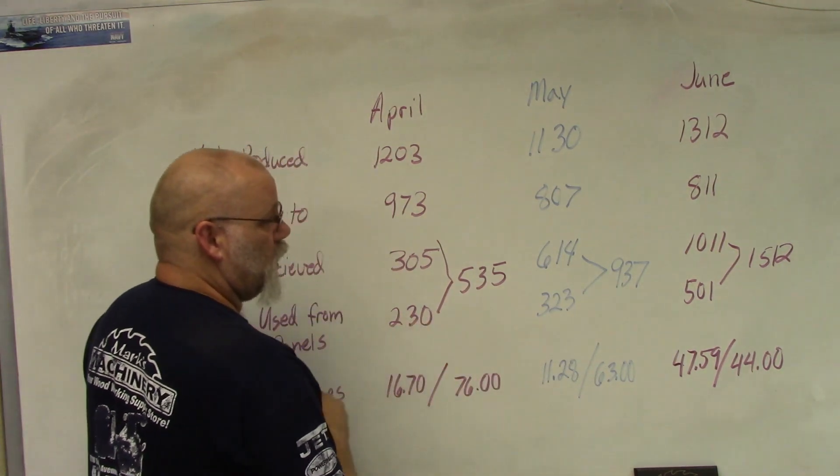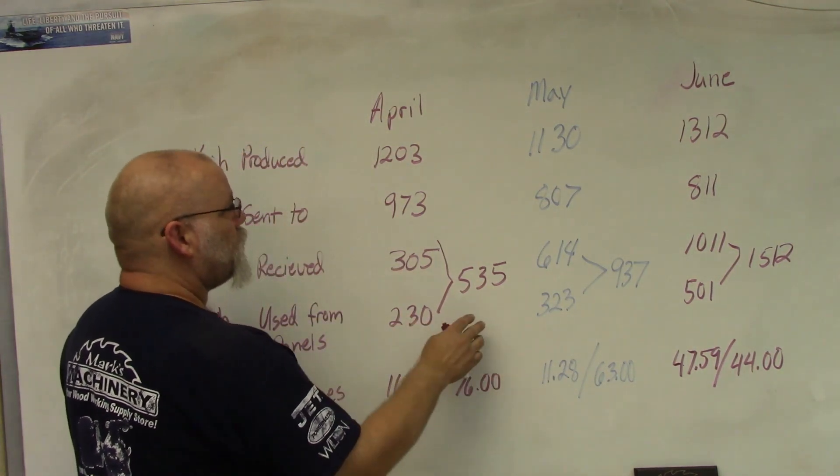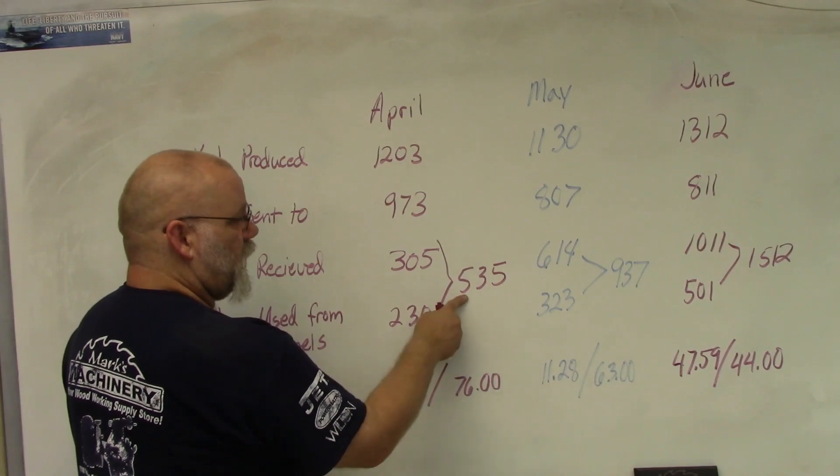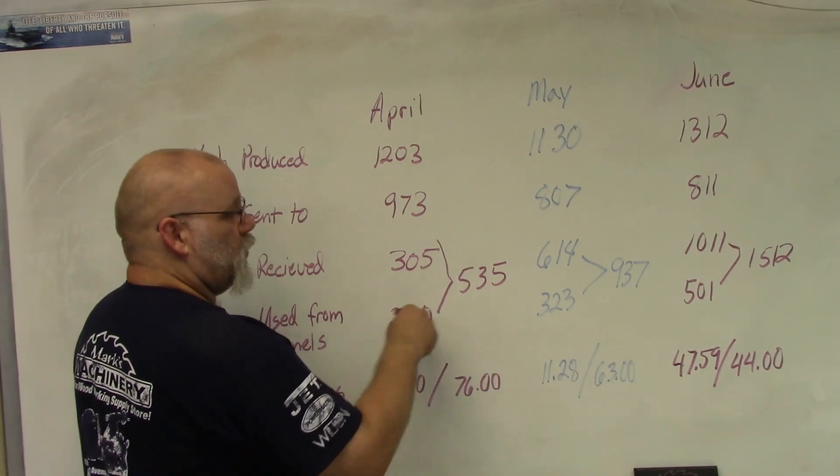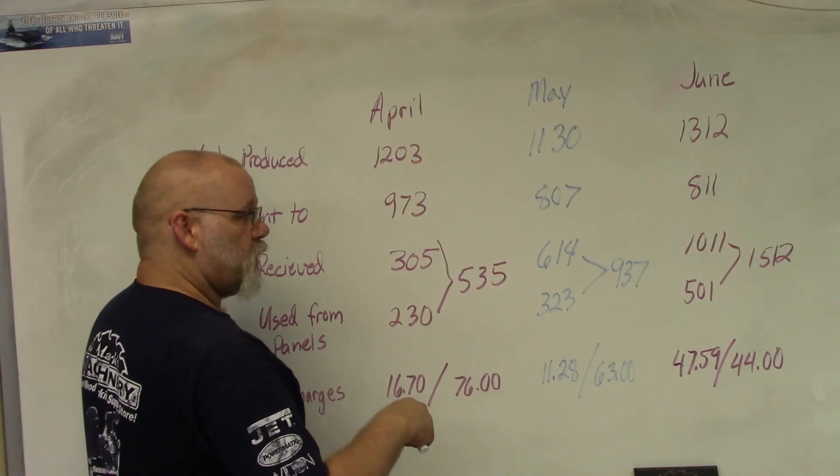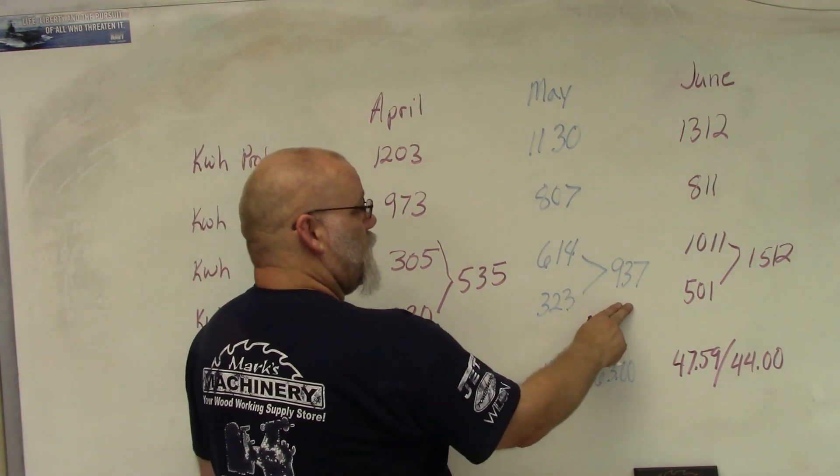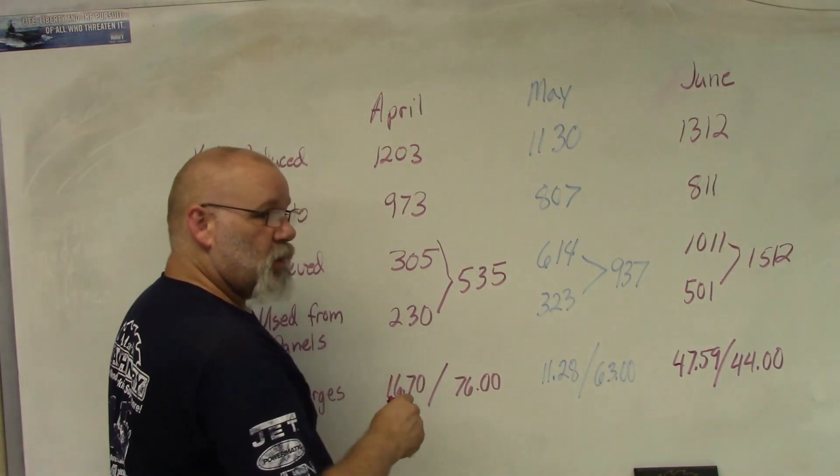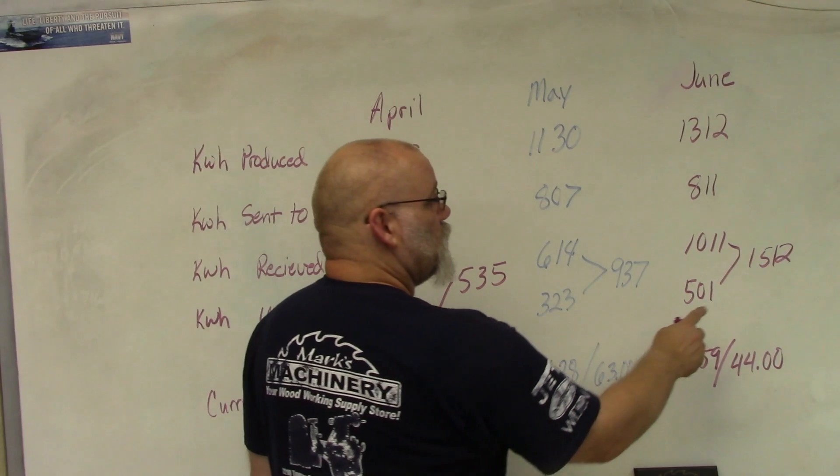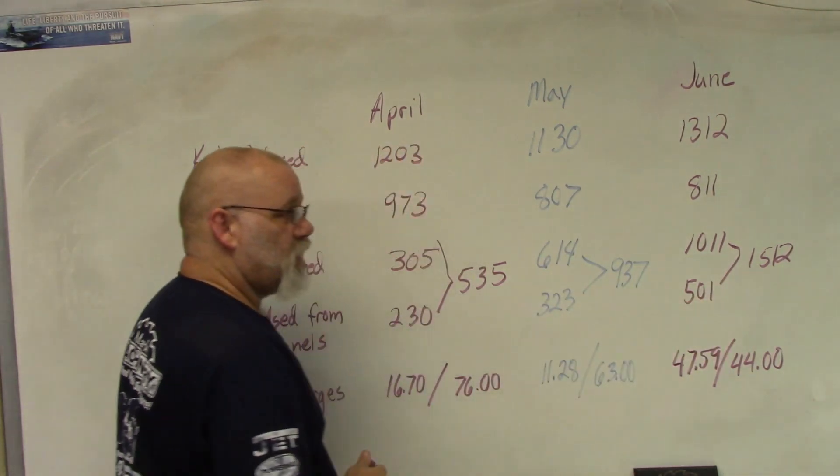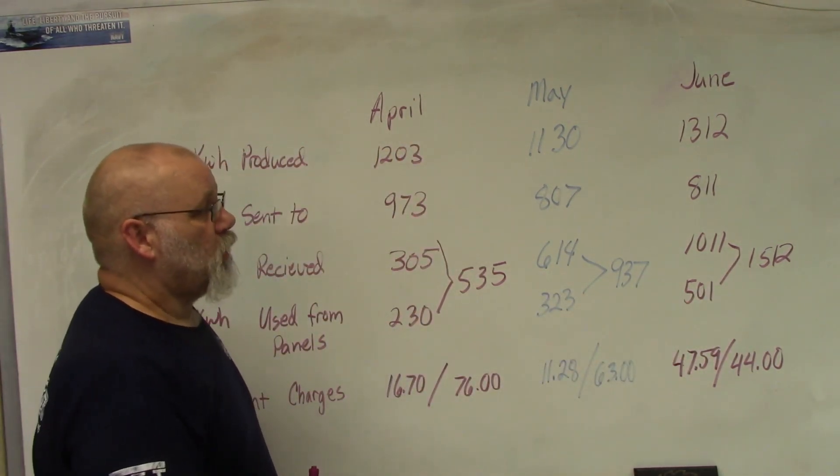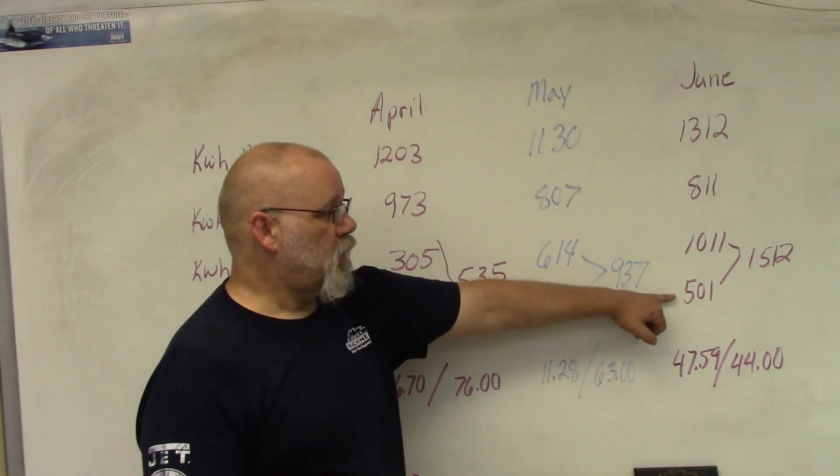In April we used a total of 535 kilowatt hours both from the grid and from our solar panels. In May we used 937 kilowatt hours, and in June we used 1,512 kilowatt hours total - 501 from our panels and 1,011 from the grid.